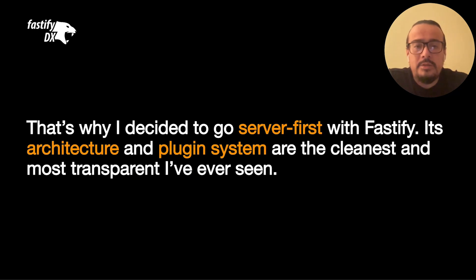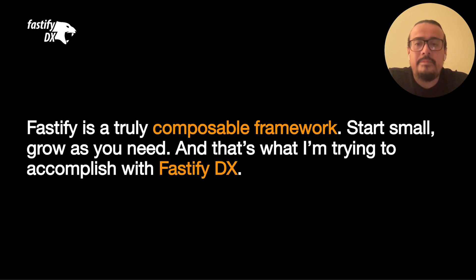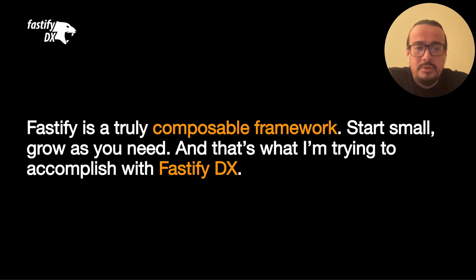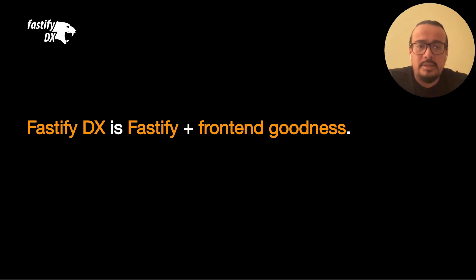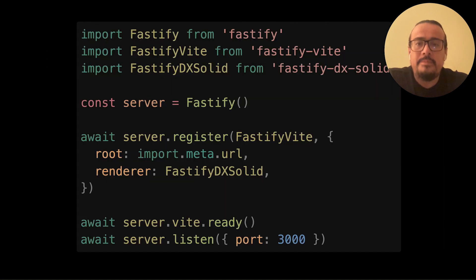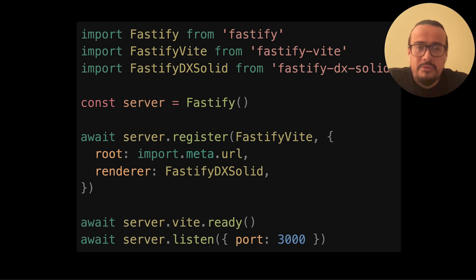That's why I decided to go server first with Fastify. Its architecture and plugin system are the cleanest and most transparent I have ever seen. Fastify is a truly composable framework — you can start small, grow as you need. And that's what I'm trying to accomplish with Fastify DX. Fastify DX is Fastify plus front-end goodness, all powered by Vite. So you just have your server.js file, your Fastify server, the Fastify Vite plugin, and the Fastify DX adapter for your framework of choice. In this snippet, I'm using SolidJS.